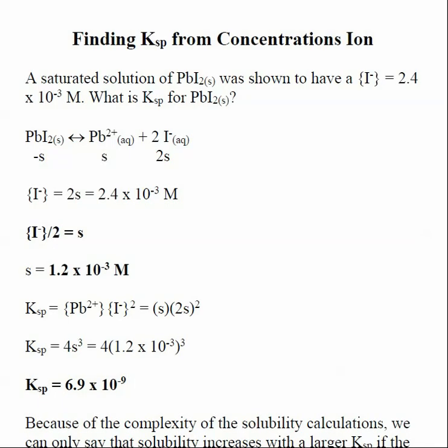Thus far we've been looking at how to determine the concentration of ions from an insoluble salt if I'm given a Ksp. Now we're going to flip that around and calculate a Ksp if I'm given the equilibrium concentration of one of the ionic species from an insoluble salt. So we're going to be going the other way.